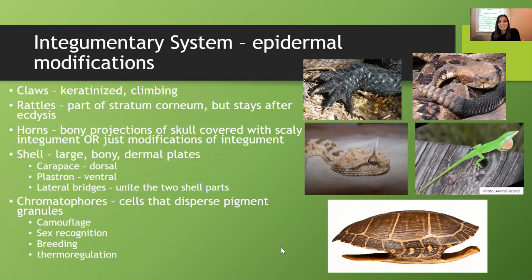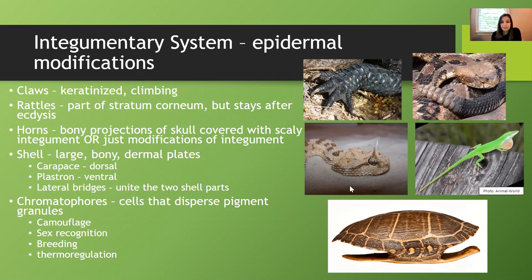There are some interesting modifications related to the epidermis. Claws are an extension of the epidermis made of keratin and can be used for climbing, digging, and securing prey. The rattle is part of the stratum corneum but doesn't get shed — the rattle stays even after the skin is shed. Horns can be bony projections of the skull covered with scaly integument, or sometimes just modifications of the integument itself, as in the horned rattlesnake where no skeleton is involved in those horns.